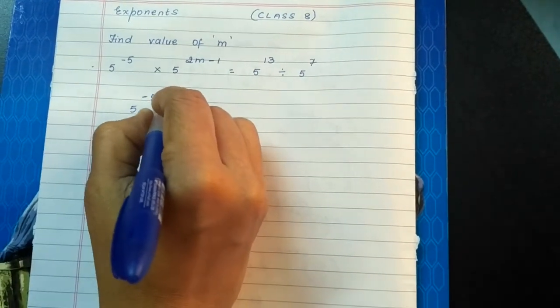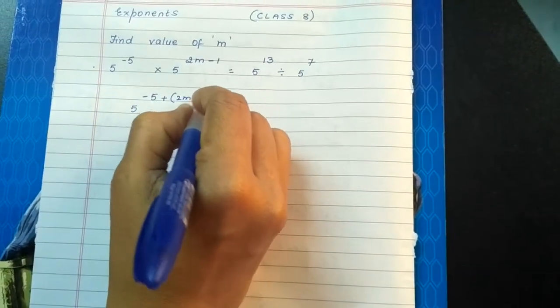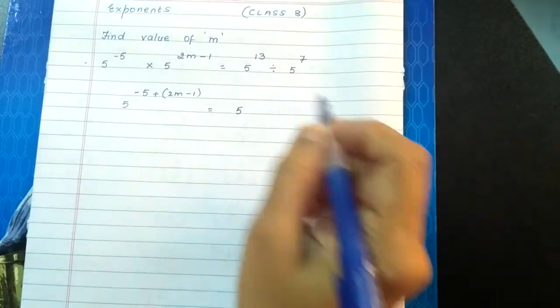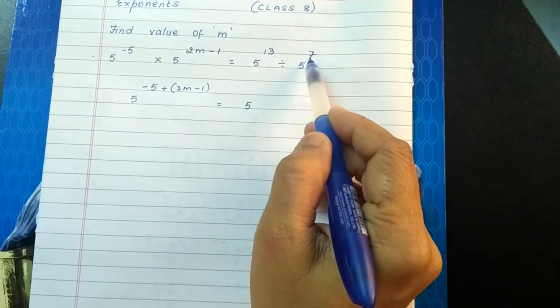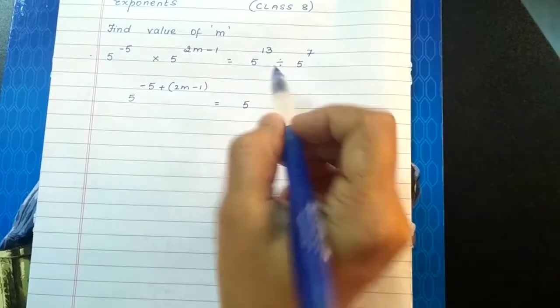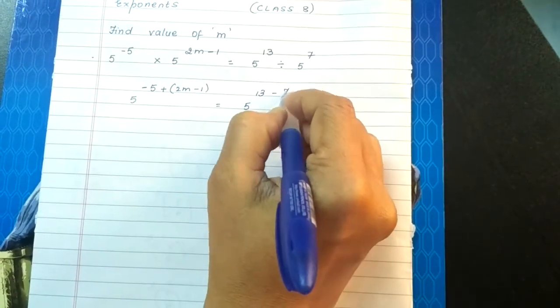So -5 + 2m - 1 equals... a^m / a^n = a^(m-n). So this will be 13 - 7.